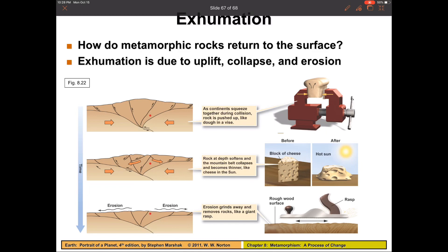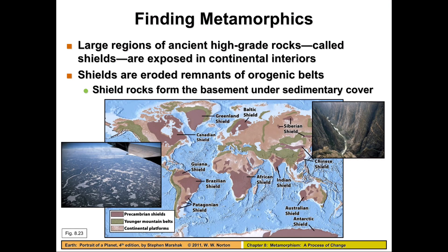How do metamorphic rocks come up to the surface? Plate tectonics. As two areas collide, rocks can be brought up to the surface, and as that area erodes over time, metamorphic rocks become exposed. On this map, anything in light gray or dark gray represents metamorphic rocks. The dark gray are metamorphic rocks at the surface; the lighter gray are metamorphic rocks buried underneath sedimentary rock. This shows that some of the very old original material from when the continents started forming is still around, telling us about the diverse and rich history of the continents on our planet.